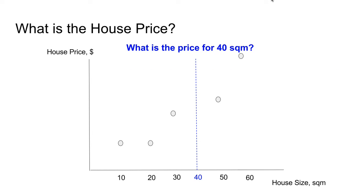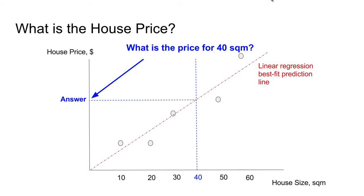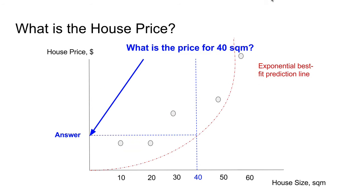But we cannot answer what is the price for 40 square meters. Using linear regression, we can draw a straight line that best fits our data, and with that we can predict the answer for 40 square meters. Similarly, we can use an exponential model, which has a curve, to best fit our data, and it will give us a prediction of what is the price for 40 square meters. However, we will get a different answer.